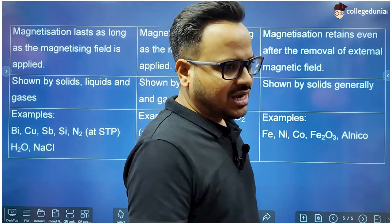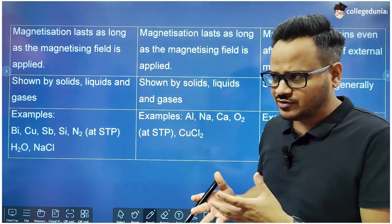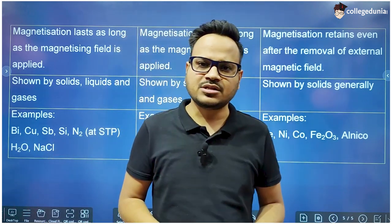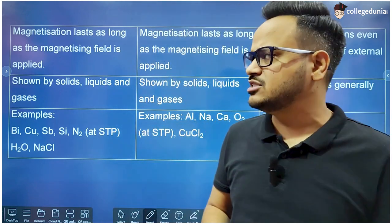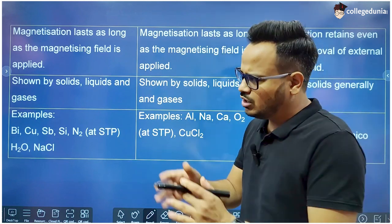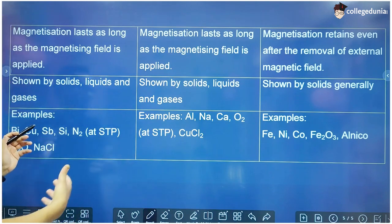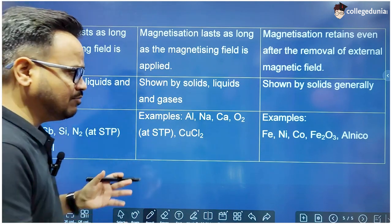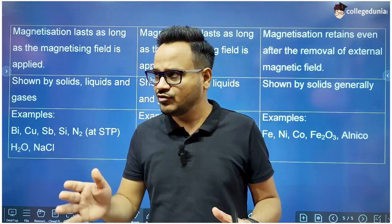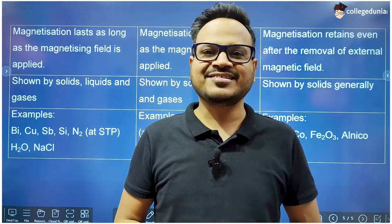These properties are very important for exams. Sometimes a big question of 3 to 5 marks comes from this topic where you have to compare 5 or 6 properties of all three substances. Small questions of 1 or 2 marks may also come based on 1, 2, or 3 properties. All the values discussed — susceptibility, relative magnetic permeability — are very important, and examples are also very important. Prepare them carefully. I will meet you in the next lecture.